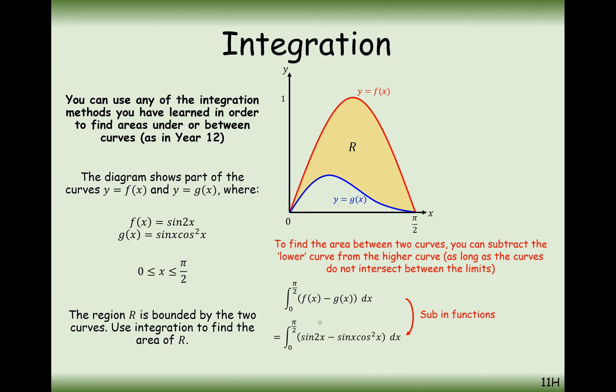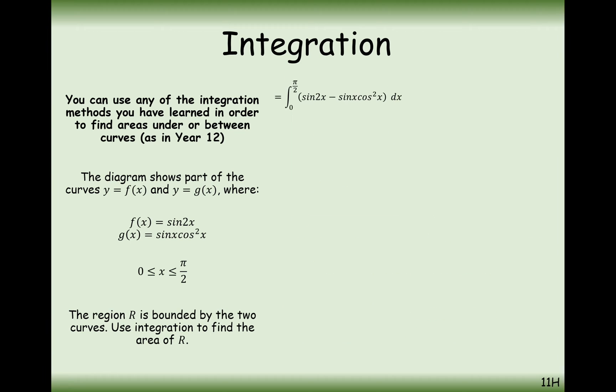So in this question we're going to be working out the integral of sine 2x, that was the one on the top, take away sine cos squared x, that was the one on the bottom, and as long as they're both in between the boundary of 0 to pi by 2, then that is fine. We could do it one integral take away another integral, that would be fine as well.